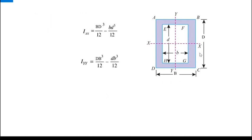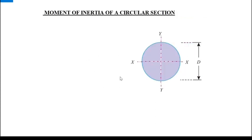In some textbooks, the bigger rectangle dimensions are written as capital B × capital D and the smaller as small b × small d. So we can represent it as: Ixx = BD³/12 − bd³/12, and similarly for Iyy.